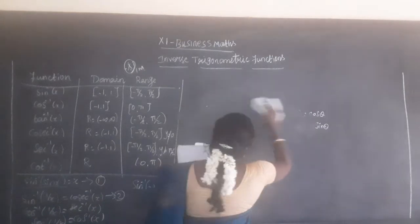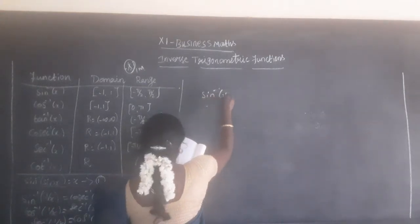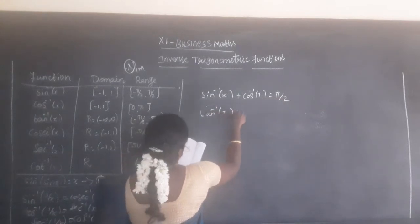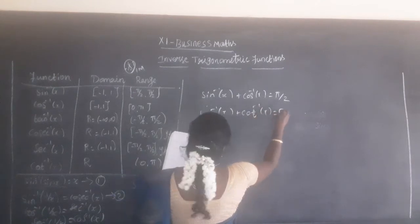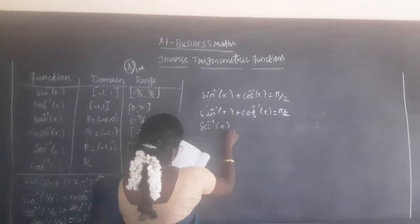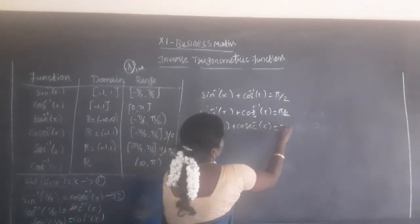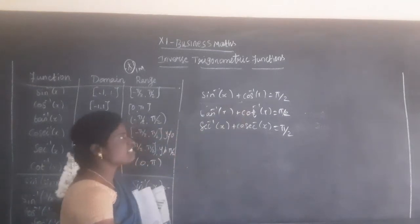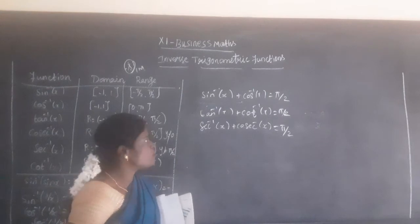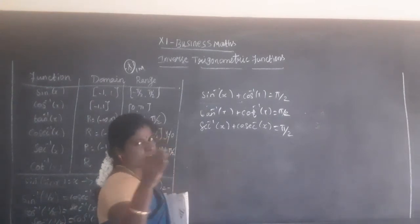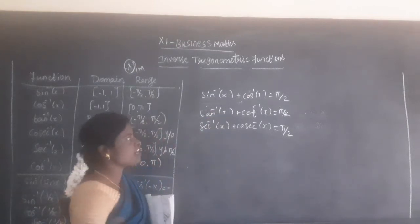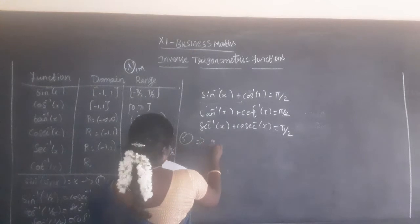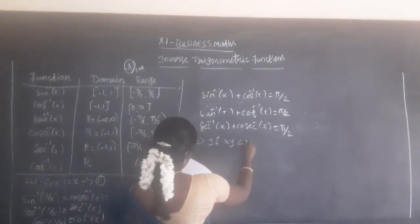The fourth property: sin inverse of x plus cos inverse of x equals π by 2. Similarly, tan inverse of x plus cot inverse of x equals π by 2. And secant inverse of x plus cosecant inverse of x equals π by 2. These are the formulae for the fourth property.